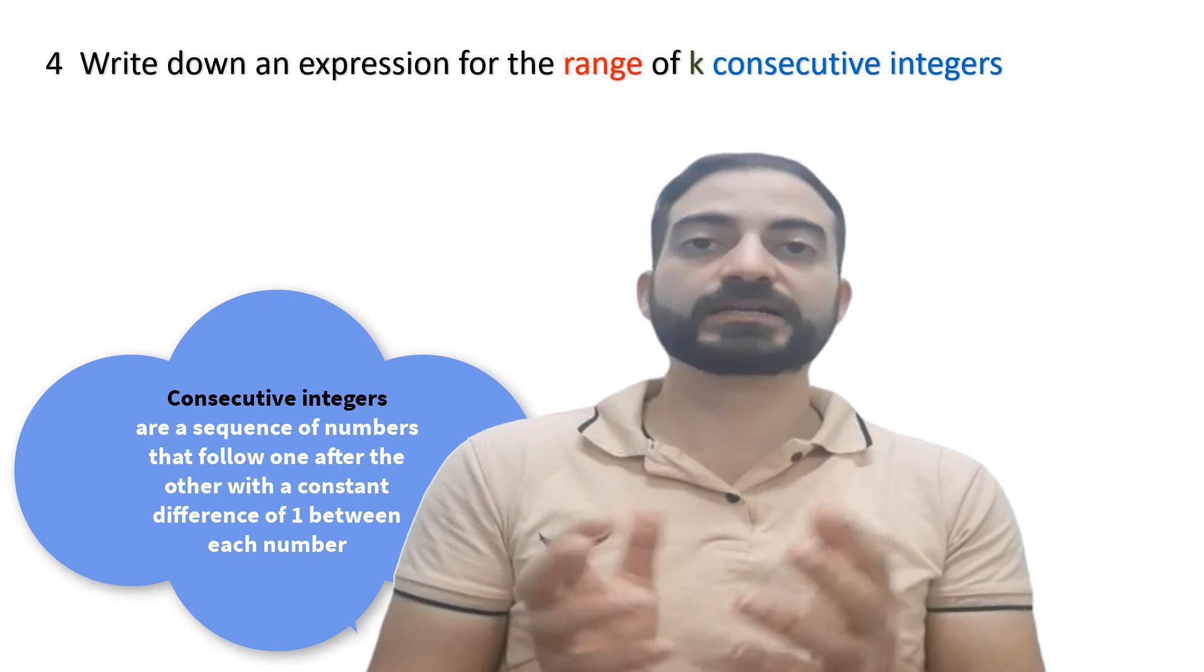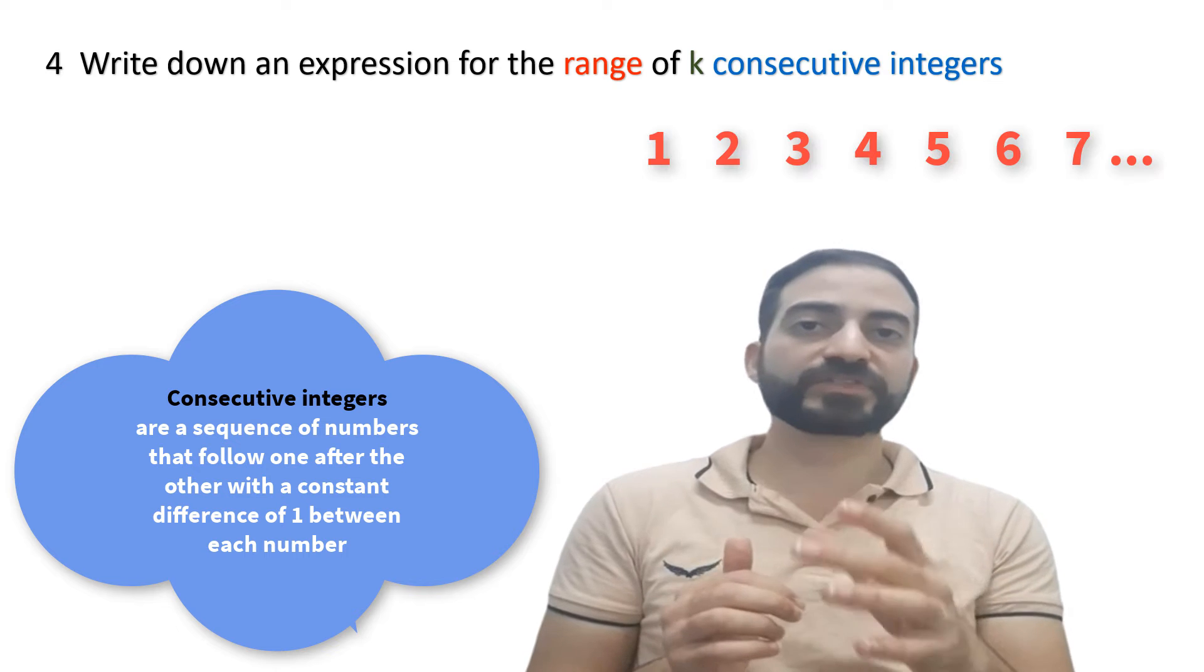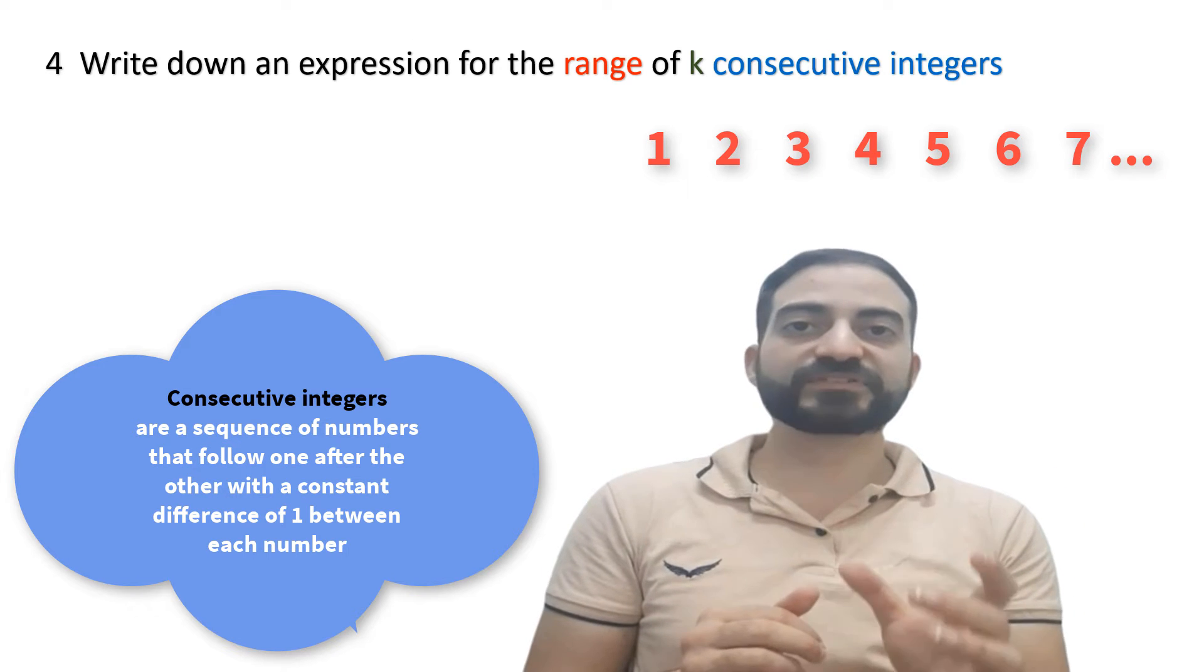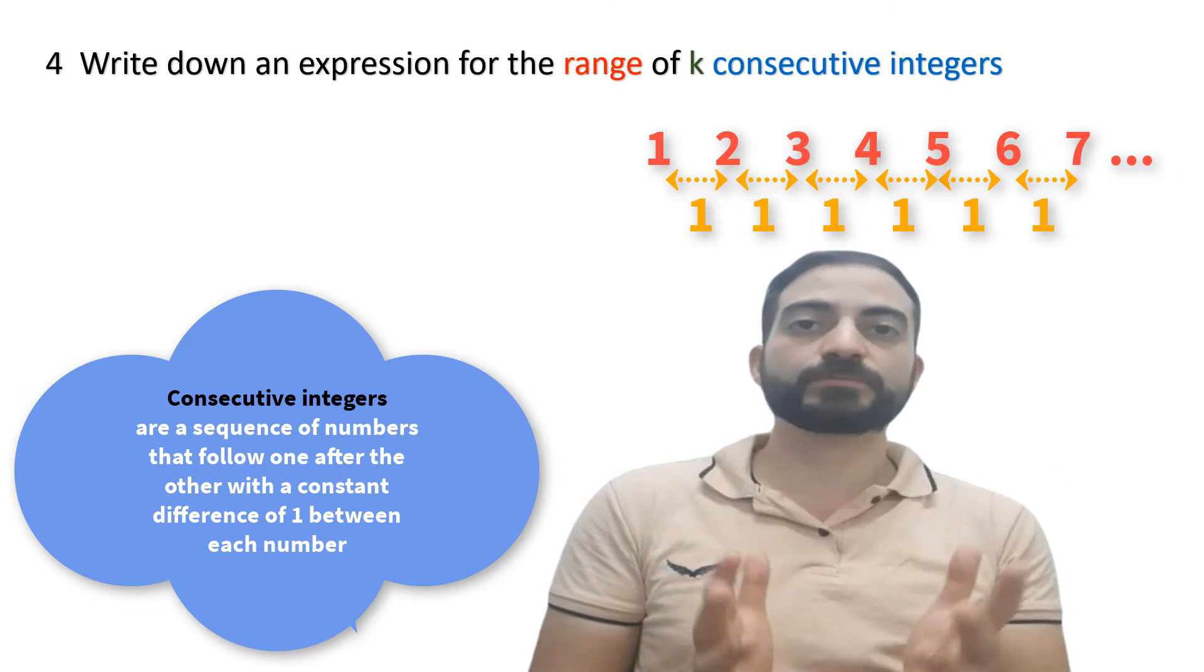Consecutive integers are a sequence of numbers that follow one after the other with a constant difference of 1 between each number.